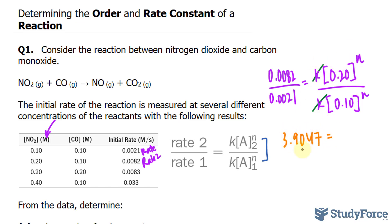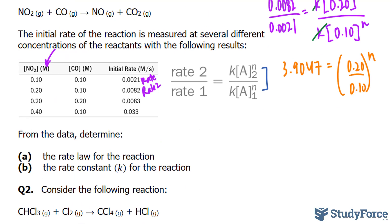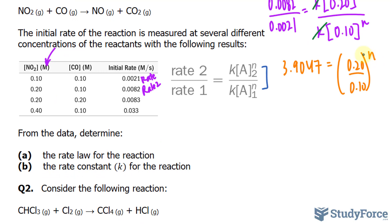And on the right side, you do need to know a little bit of algebra for this. This is the same thing as saying 0.20 over 0.10 raised to the power of n. The easy way to solve for n is to either ln both sides or log both sides. That's strictly up to you. So I'm going to go ahead and ln both sides, just like that.